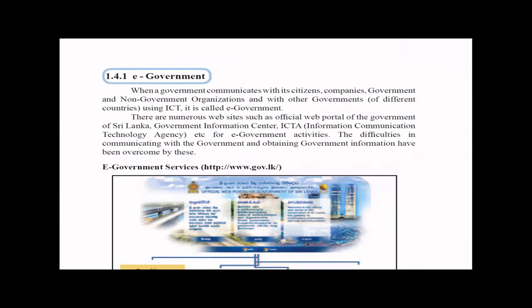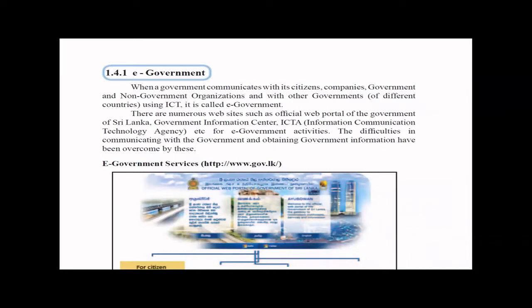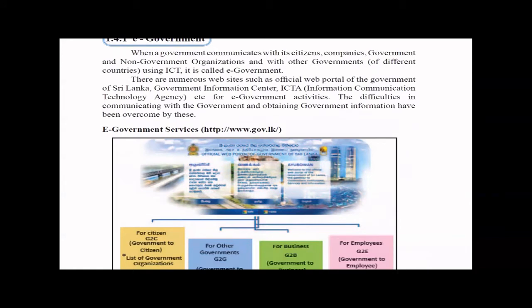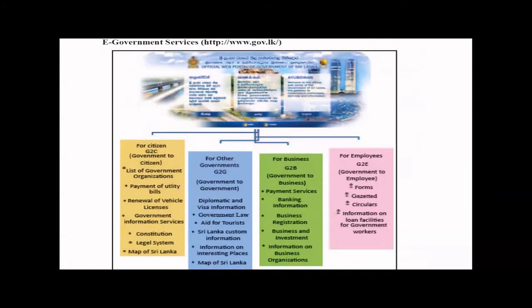First, we'll talk about e-government. When the government communicates with its citizens, companies, and other organizations using ICT, we call it e-government. There are a lot of websites available as information providers. When talking about government services, there are G2C (government to citizen), G2G (government to government), G2B (government to business), and G2E (government to employee).